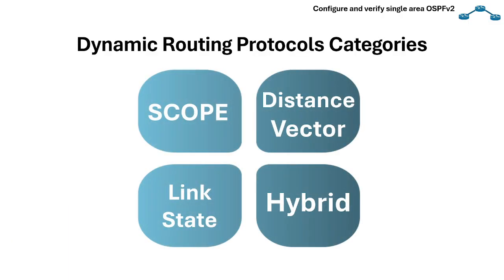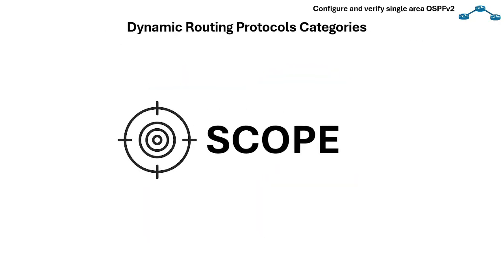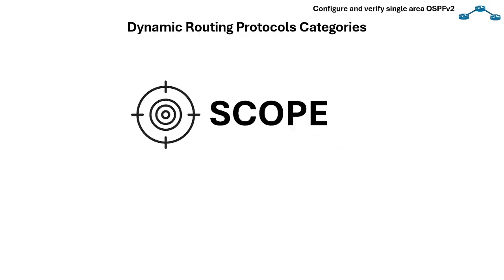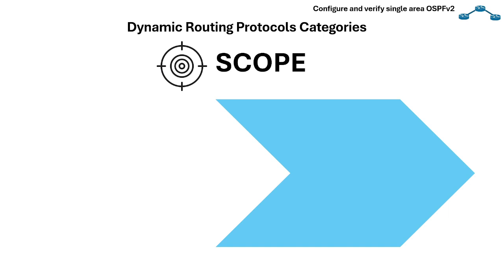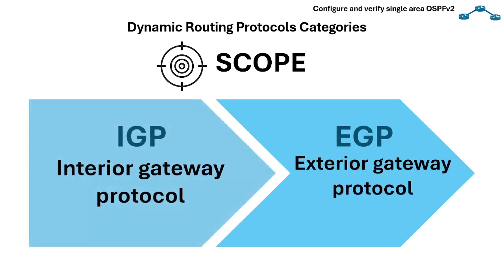Network routing protocols fall into different categories and classes based on the scope they have and the algorithm they use. Let's discuss the different categories and see where OSPF falls. There are two major categories based on their scope: Interior Gateway Protocol or IGP, and Exterior Gateway Protocol or EGP.